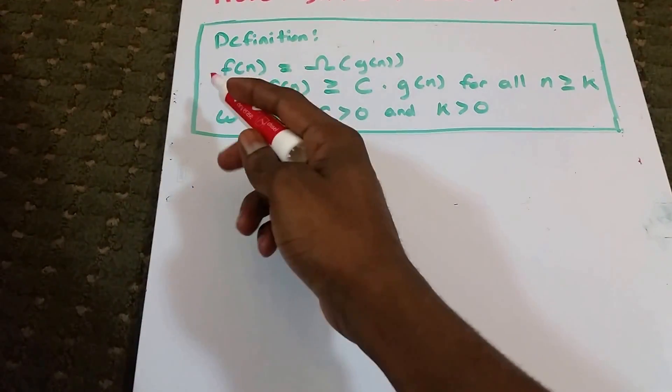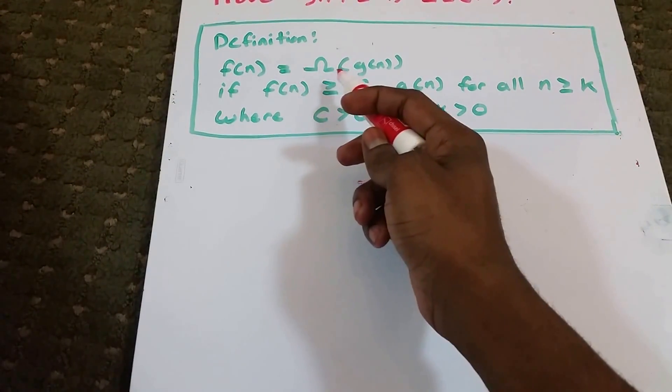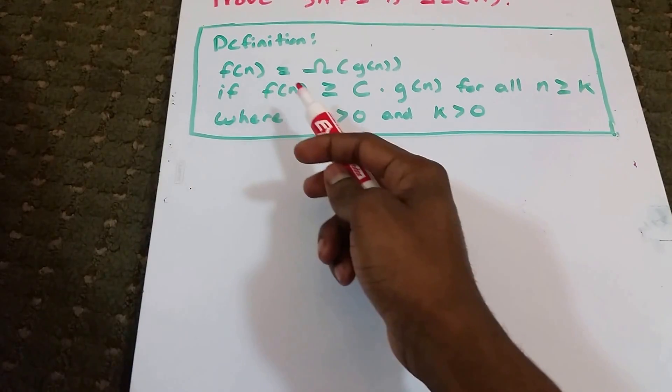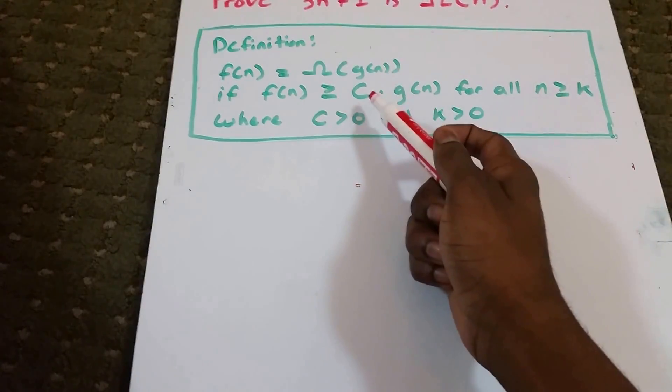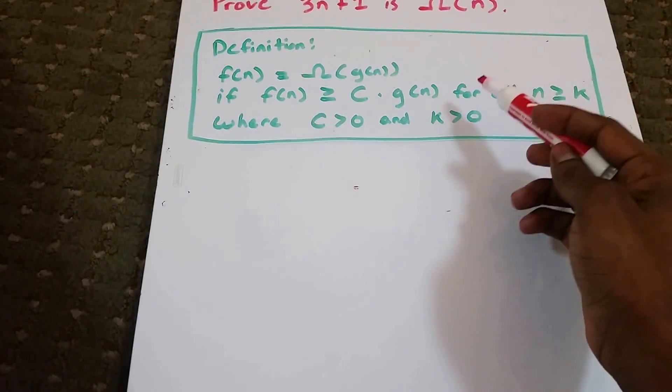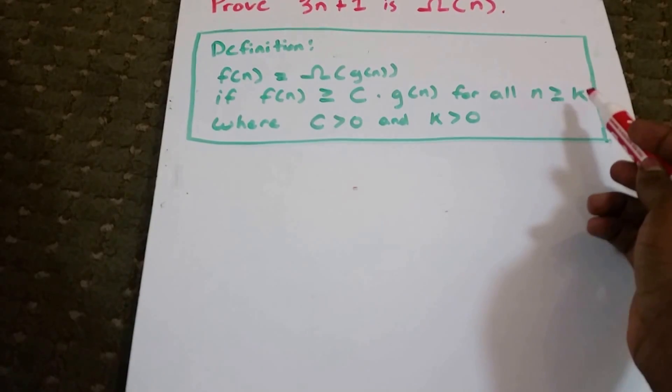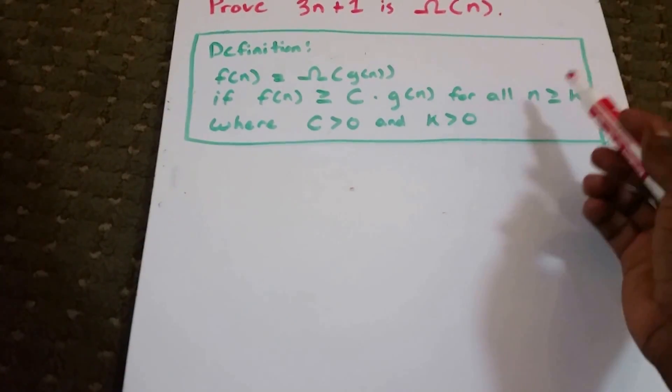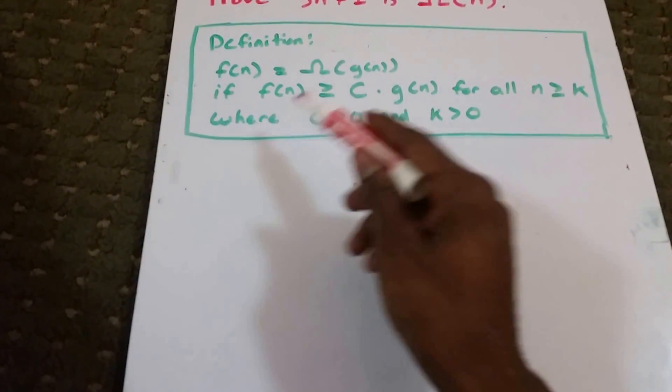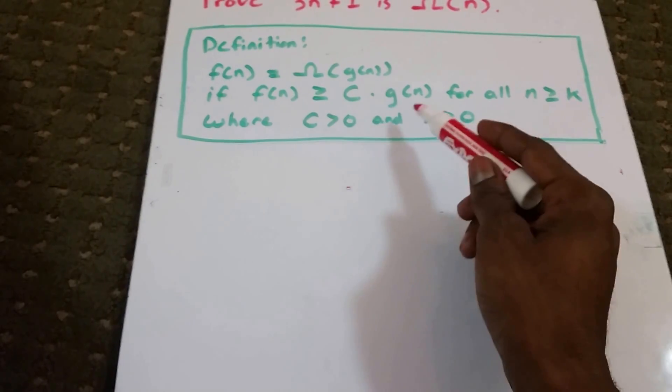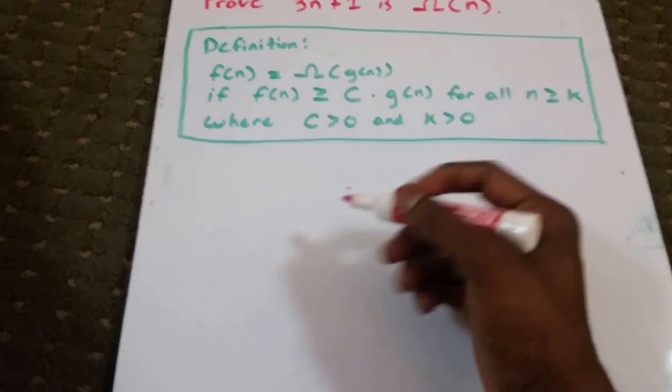Here we have the definition. It says that f of n is big omega of g of n if f of n is greater than or equal to some constant times g of n whenever n is greater than or equal to k, or for all n greater than or equal to k, where our constant C is greater than 0 and our K is greater than 0. So they're both positive.